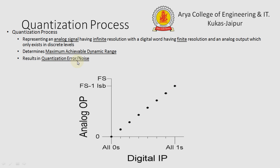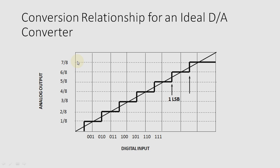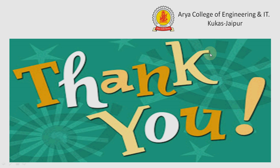Quantization also results in quantization error and noise. Here is the conversion relationship for an ideal DA converter: the digital signal is first sampled and then quantized, and after quantization this is how the signal is converted back into an analog signal. Thank you.